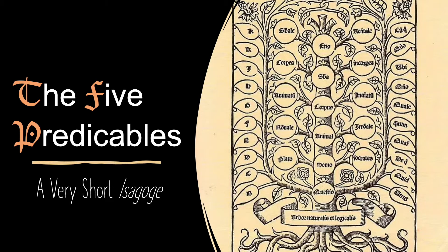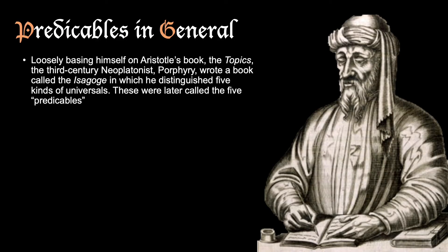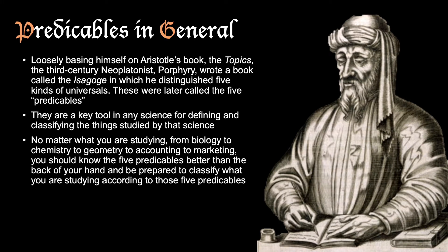The Five Predicables. Loosely basing himself on Aristotle's book The Topics, the 3rd century Neoplatonist Porphyry wrote a book called The Isagoge, in which he distinguished five kinds of universals. These were later called the Five Predicables. They are a key tool in any science for defining and classifying the things studied by that science. No matter what you are studying—from biology to chemistry to geometry to accounting to marketing—you should know the Five Predicables better than the back of your hand.